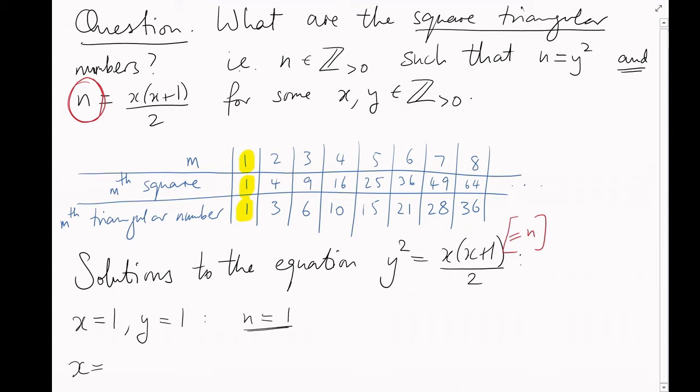But notice also that the eighth triangular number and the sixth square number are equal. They're both 36. So, x equals 8 and y equals 6 gives n equals 36. Are there more solutions to this equation?